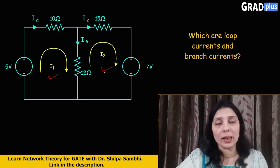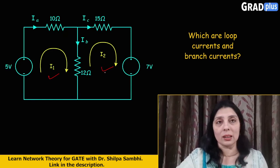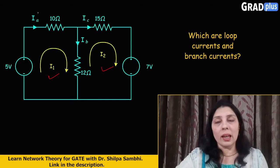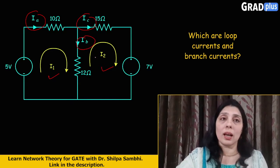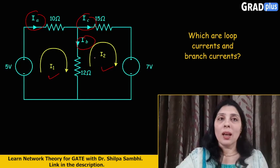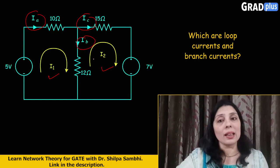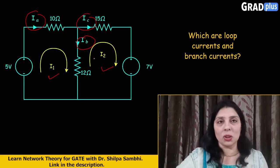This is an imaginary current, it's a hypothetical current. But Ia, Ic, and Ib, these are the actual currents which are flowing through the circuit elements. And these are known as the branch currents.